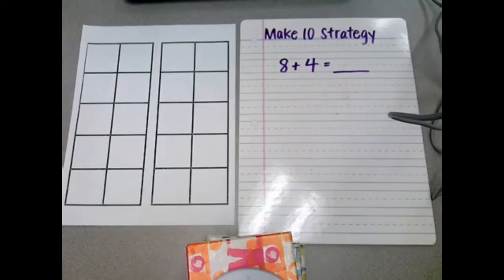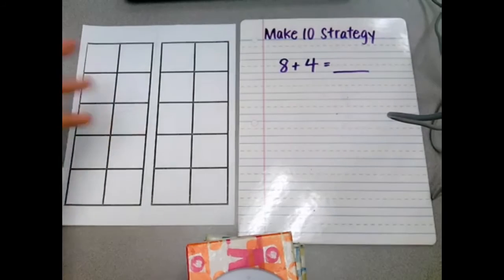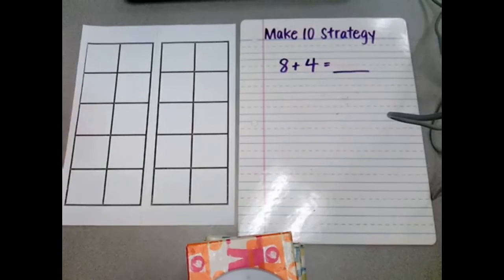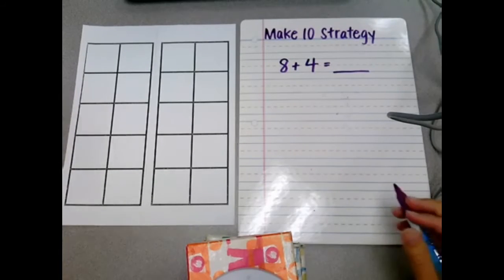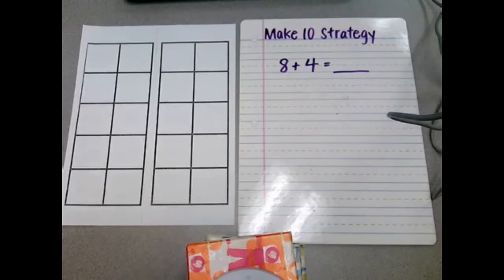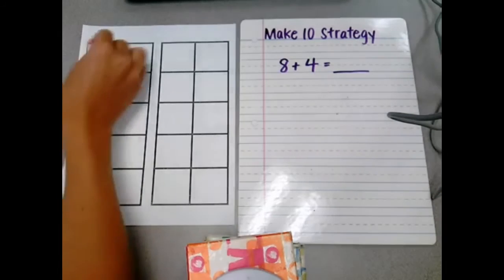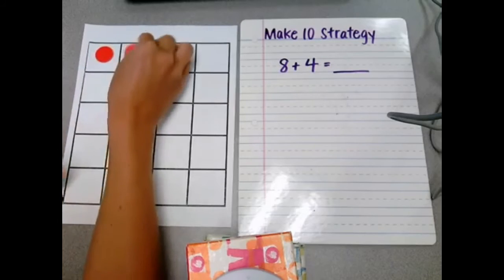Now while this problem looks pretty simple right away, and most students are able to just know it, we want them to get the process of making 10 under control now, that way when problems get harder, it becomes more of a habit for them to do problems like this. So in the Make 10 strategy, basically, we have students recognize that 8 is part of 10.